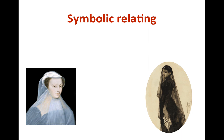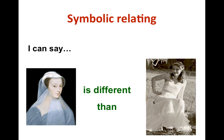What happens next is amazing and really crucial to understand what is so specific about language. Contextual cues can be applied regardless of the intrinsic characteristics of the stimuli. For example, I can say that this dress is like this black dress — it might seem weird, but that's because they are both mourning dresses. So even though they are quite different at an intrinsic level, they are similar at the symbolic level. And I can say that this white dress is different from this other white dress, because this second white dress is a wedding dress.